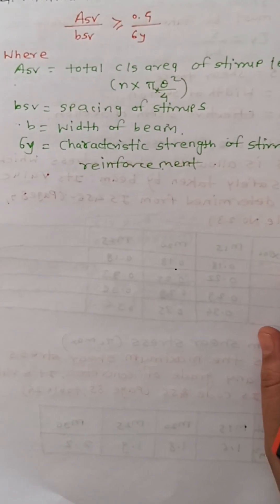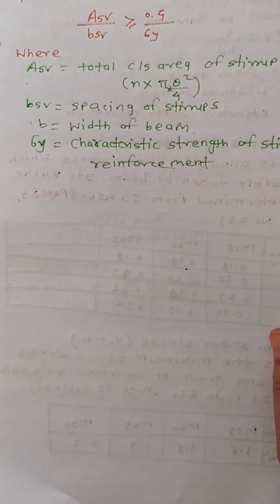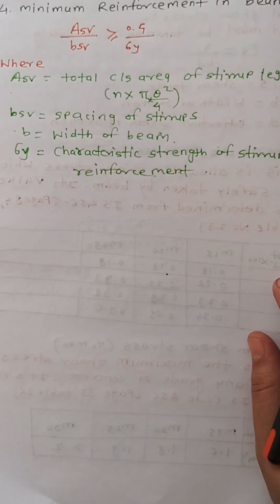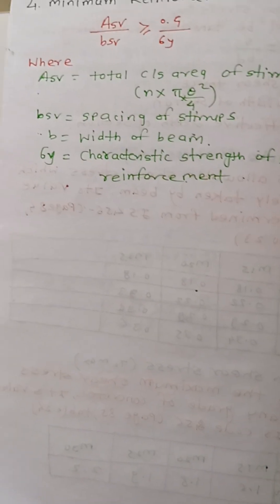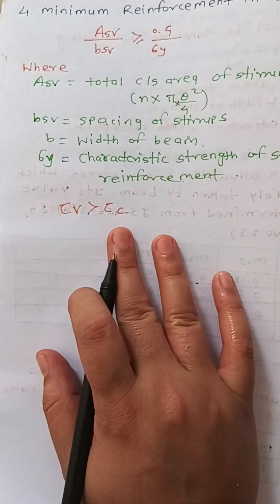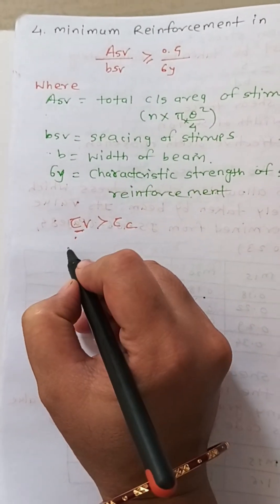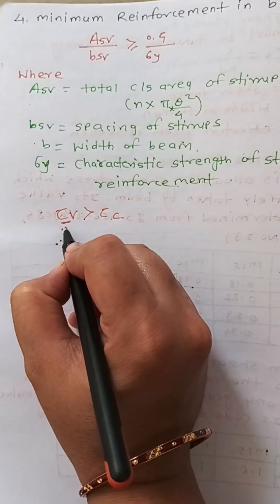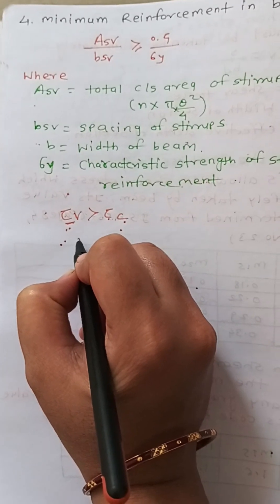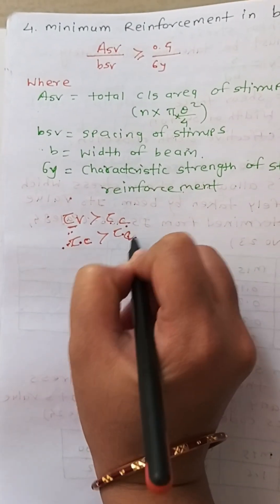There are two to three cases based on comparing nominal and permissible shear stress. The first case is when τv is greater than τc — that is, when the actual shear stress is greater than the permissible shear stress. This mostly happens in beams, and in this case you must provide shear reinforcement.